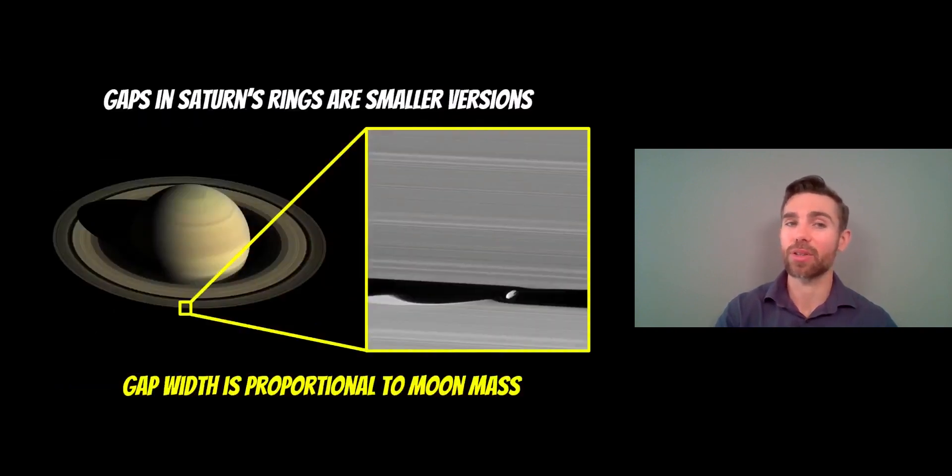When we go to Saturn's rings, moons do a very similar thing. In Saturn's rings there are a number of moons that are located inside the ring itself. They're embedded in the ring and these actually cause a gap in the same way that a Saturn sized planet might cause a gap in a disk. They have enough mass that they can gravitationally clear out material in its orbit and the gap width is proportional to the moon mass.